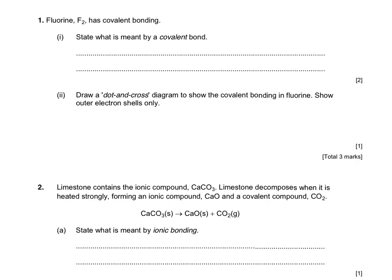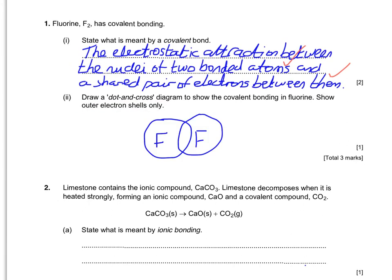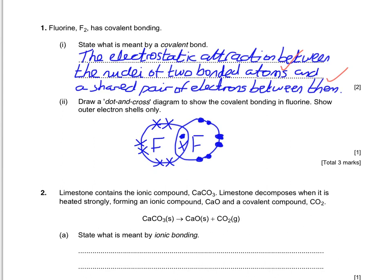Now it's exam question time. When they say 'state what is meant', they want you to give the definition of a covalent bond — some version of electrostatic attraction between the nuclei of two bonded atoms and the shared pair of electrons between them. Next, draw dot-and-cross diagrams to show the covalent bonding in fluorine, showing outer electron shells only — don't waste time drawing all the inner shells. Start by drawing overlapping circles with plenty of space for the electron pair, don't forget the unpaired electrons — six remaining per fluorine atom — and make sure you have a nice clear overlap to show the shared pair.